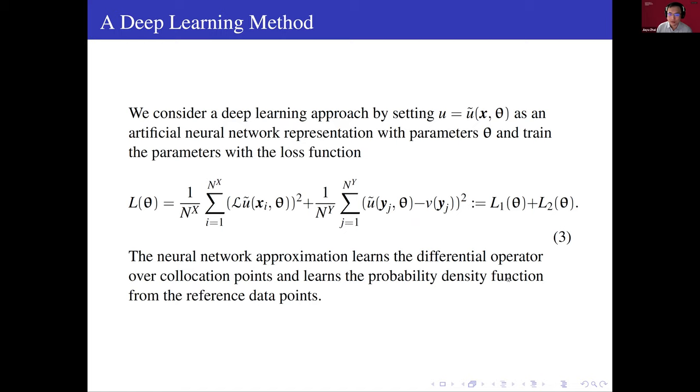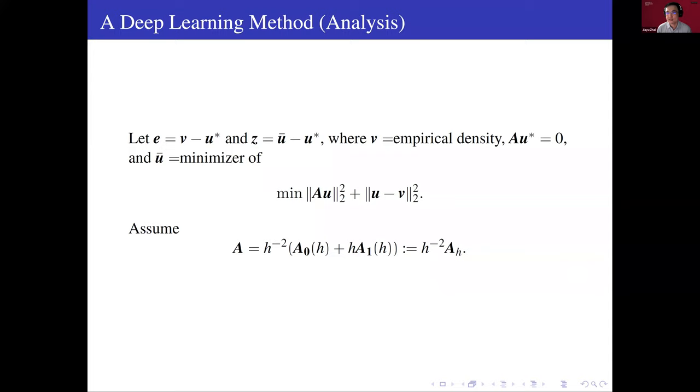So in this work, we provide some rough analysis of the method. Instead of consider the continuous version of the PDE, we discretize it into a linear equations. So AU equals zero using finite difference method. So the matrix A should be of the following form. We denote the error from the Monte Carlo by E and the error of the method by Z.